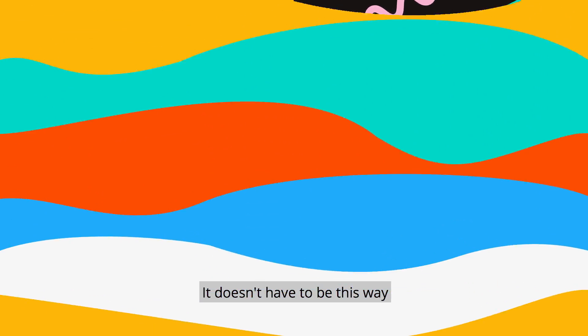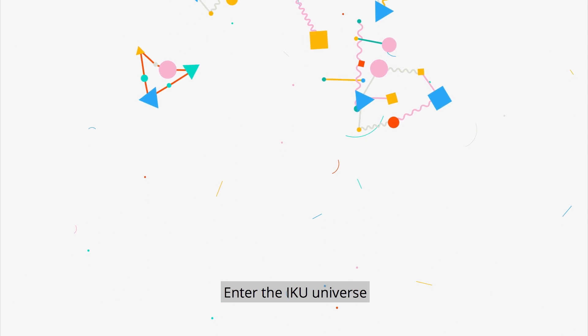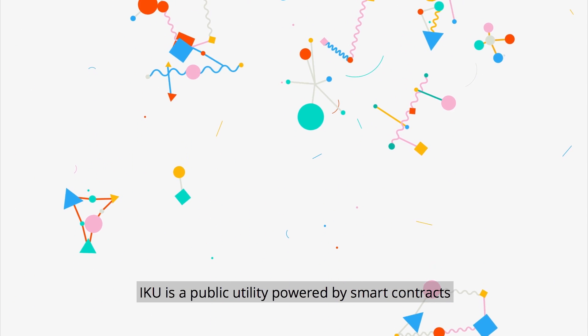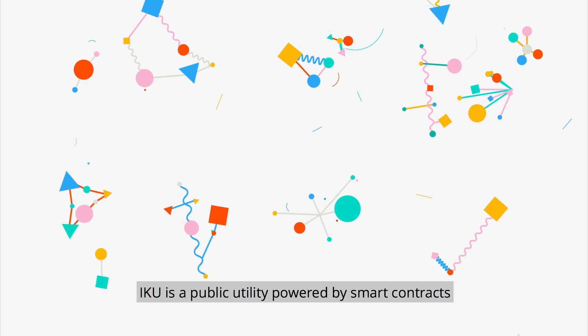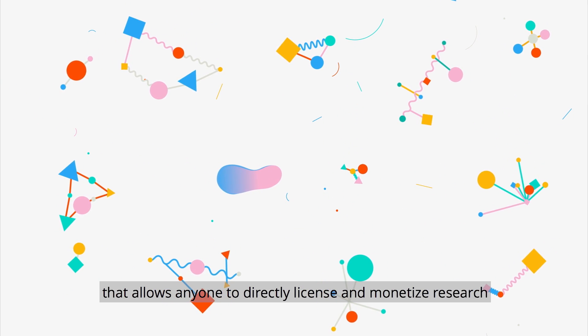It doesn't have to be this way. Enter the ECU universe. ECU is a public utility powered by smart contracts that allows anyone to directly license and monetize research.